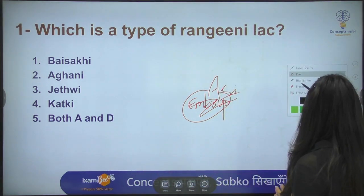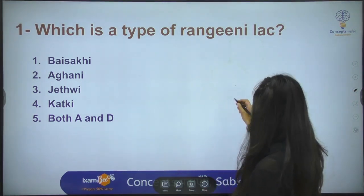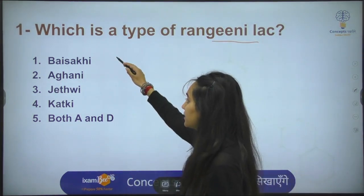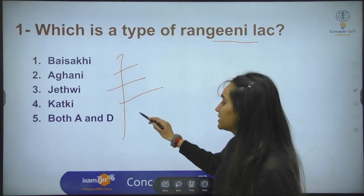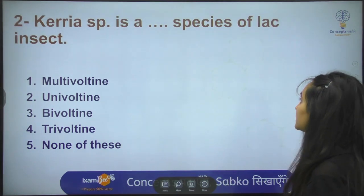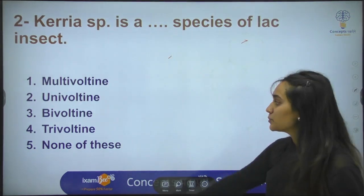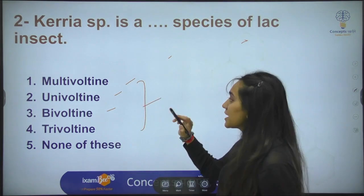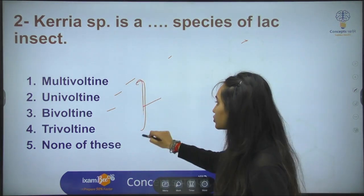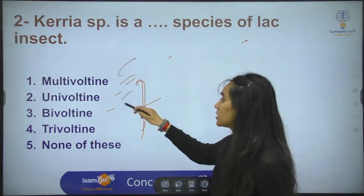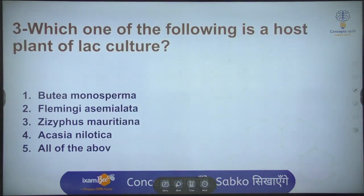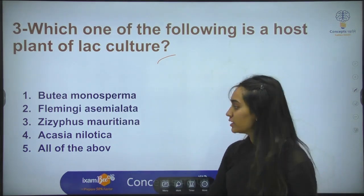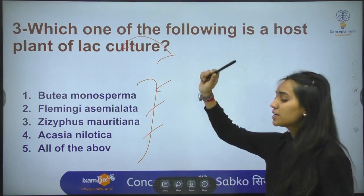Here are some practice questions for the comment section. First: which is the type of Rangeeni lac? Second: Kerria species — is it multi-voltine, uni-voltine, or bi-voltine? This refers to the type of life cycle and how many generations are completed in a time interval. Third: which of the following is a host plant used in lac culture?